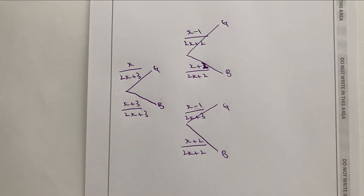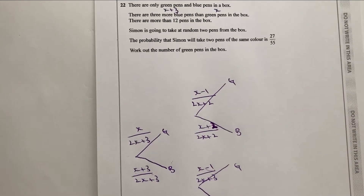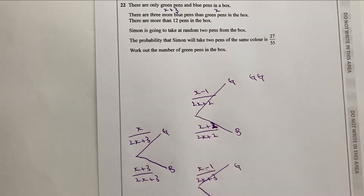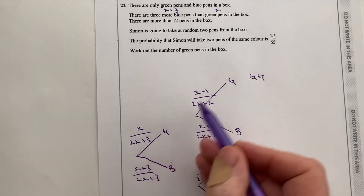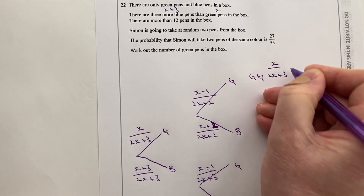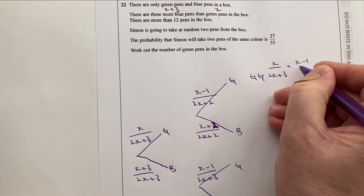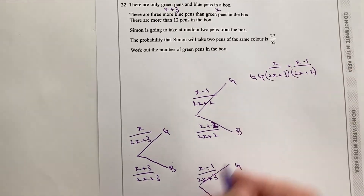The probability of picking two pens of the same colour, according to the question, is going to be 27 over 55. The outcomes we need are green-green and blue-blue. For green-green, we multiply the two branches together: X over 2X plus three, times X minus one over 2X plus two. Working out the numerator gives X squared minus X, and the denominator expands to 4X squared plus 10X plus six.